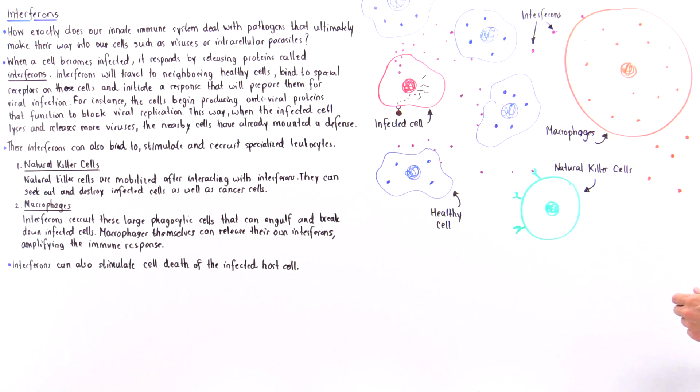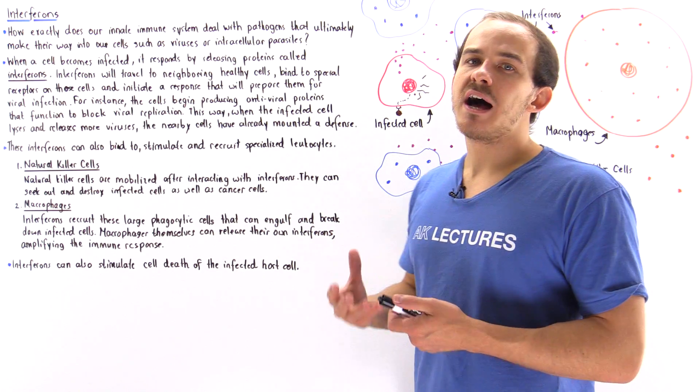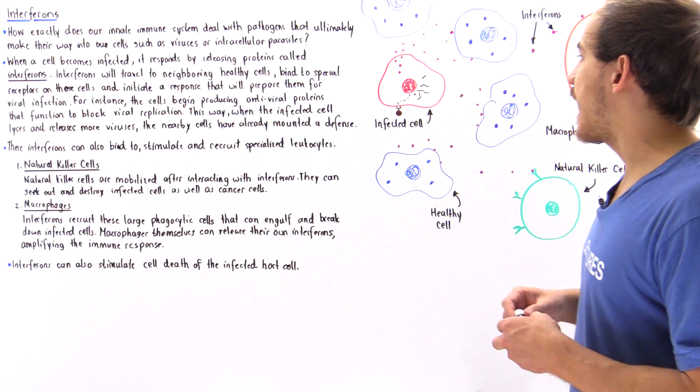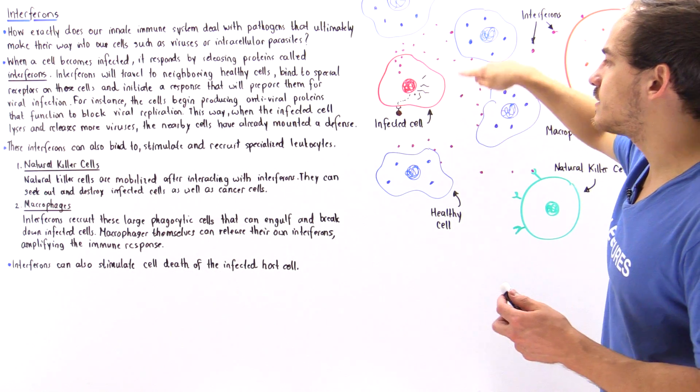Let's take a look at the following diagram. Let's suppose some type of virus infects our cell and this is the infected cell shown in red.